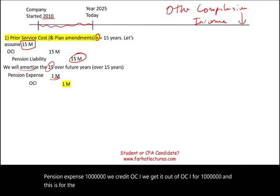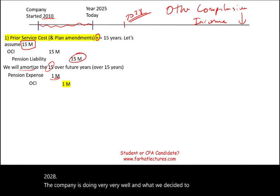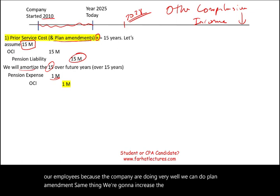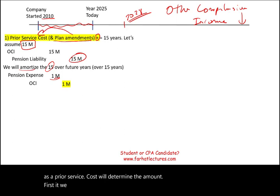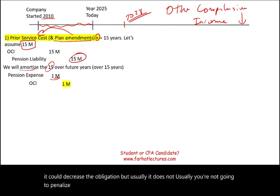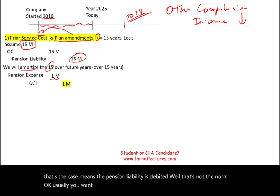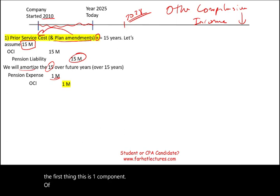Let's say in 2028 the company is doing very well and decides to do a plan amendment — increasing the amount given to employees. This is treated the same as a prior service cost: determine the amount, let it sit in OCI first, then amortize it. Plan amendment could decrease the obligation, but usually it increases it because you're compensating employees. This is one component of pension expense — and remember, this component increases pension expense.